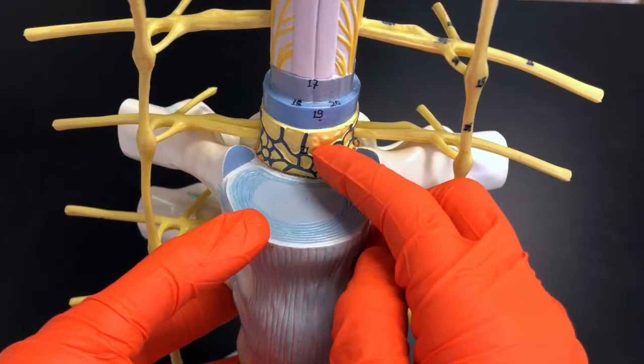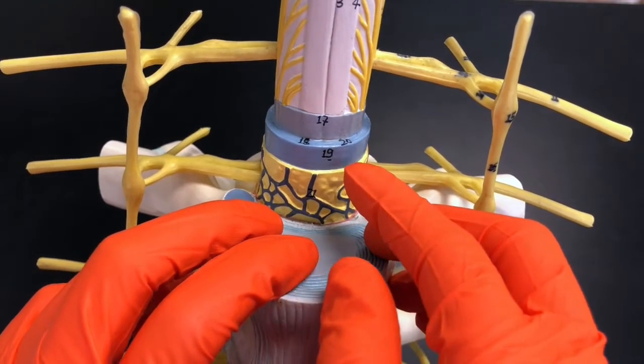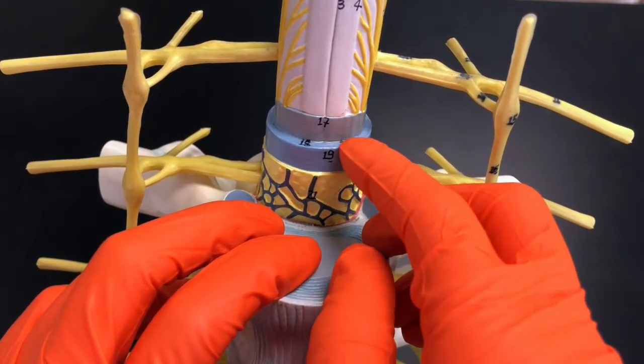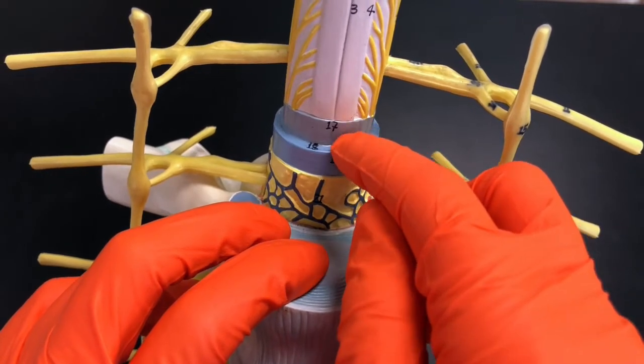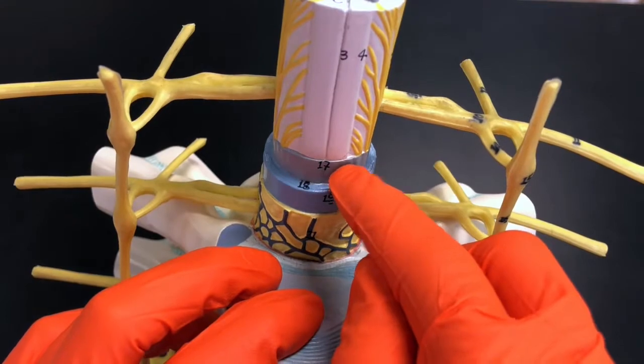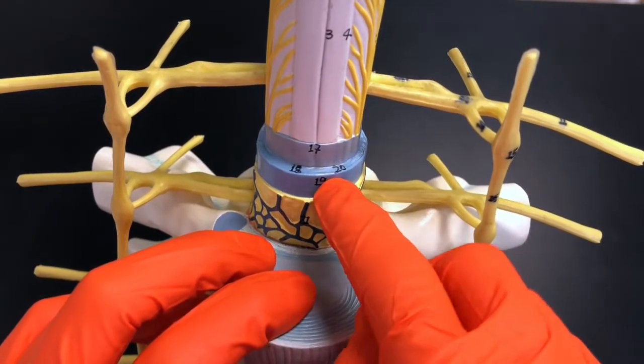In between these layers, we have spaces. The space between the arachnoid and pia mater is called the subarachnoid space. Think of 'sub' meaning below arachnoid mater, so it would be the space that is deep to this arachnoid mater right here.